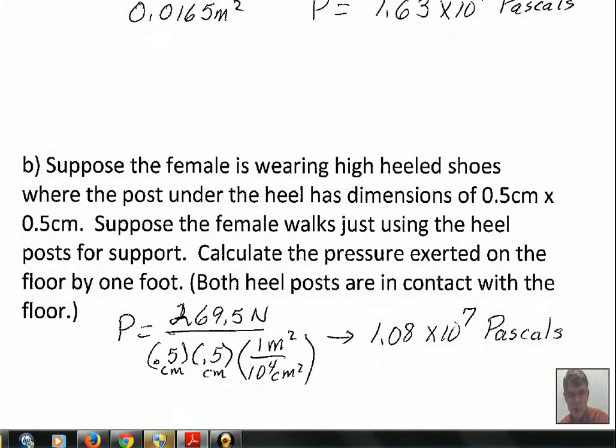But we move on. Suppose these shoes get changed and the person now wears high-heeled shoes where there's a narrow heel. And this narrow heel has dimensions of length times width of 0.5 centimeters. It's a square post. And the female is walking now just with the heels on the floor. It's a hypothetical problem.